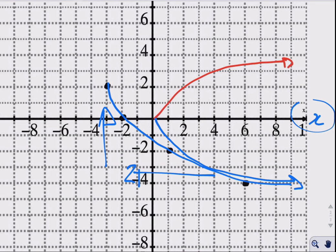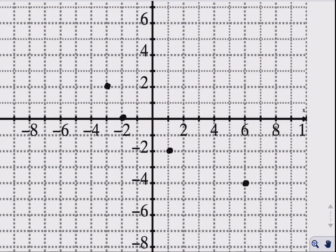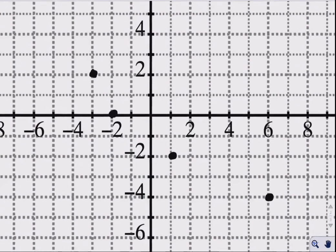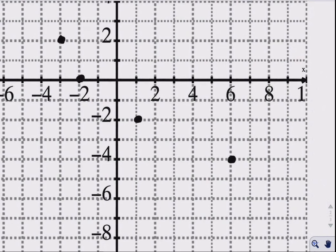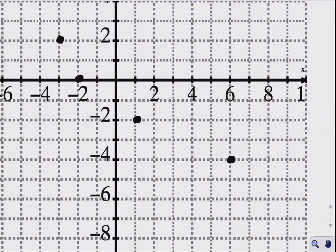Let me just clean up this Cartesian plane here and draw the final sketch. So I'll do that with the black, and it's looking something like this. Arrow on the end here because it goes on to infinity.